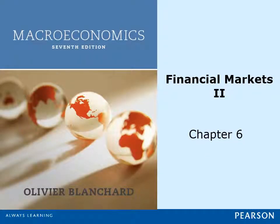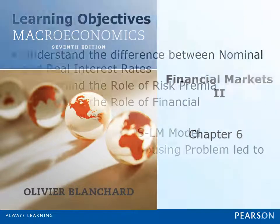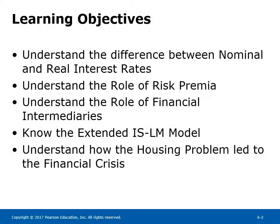Chapter 6: Financial Markets 2. Learning objectives: understand the difference between nominal and real interest rates; understand the role of risk premia; understand the role of financial intermediaries; know the extended IS-LM model; and understand how the housing problem led to the financial crisis.